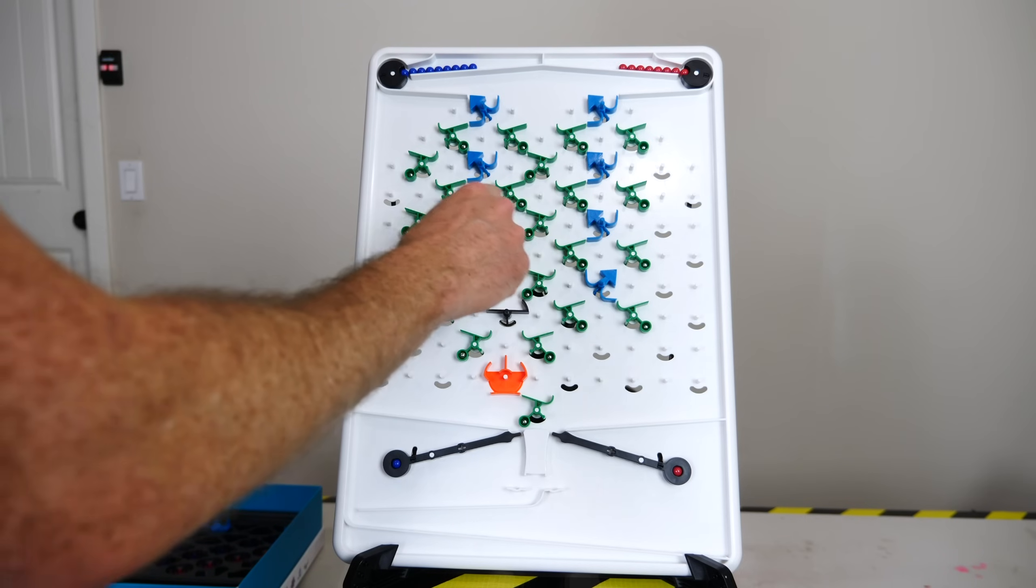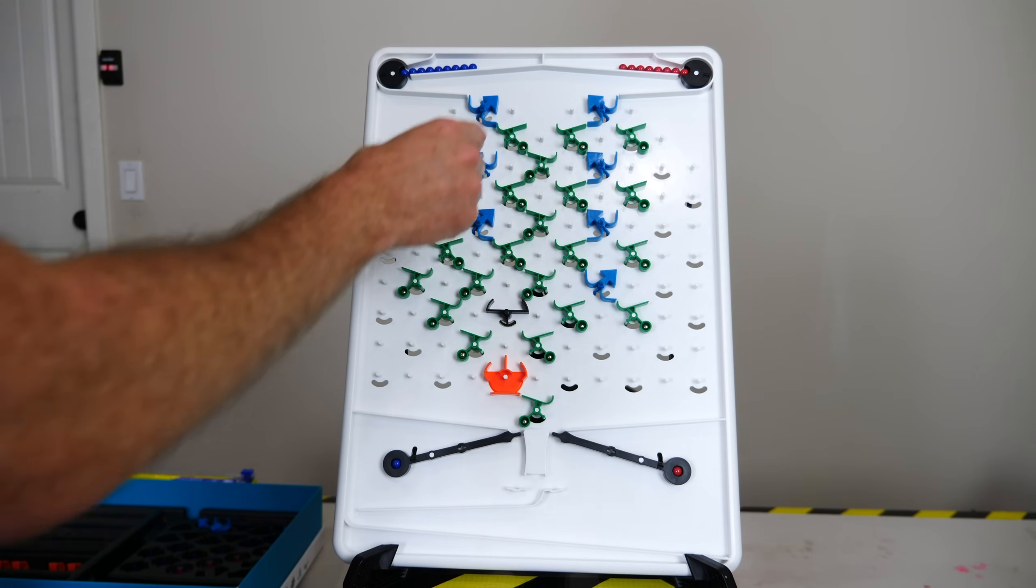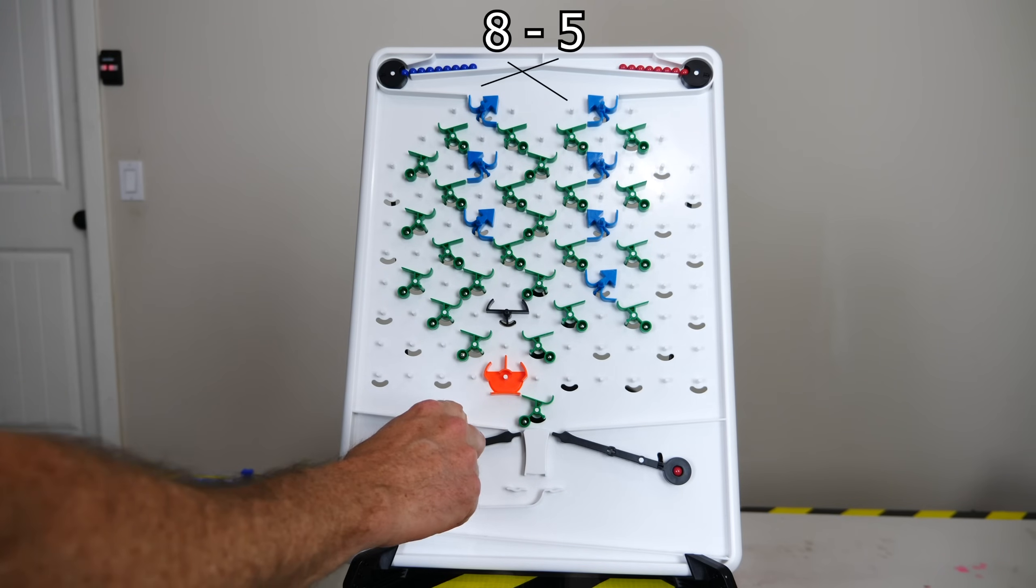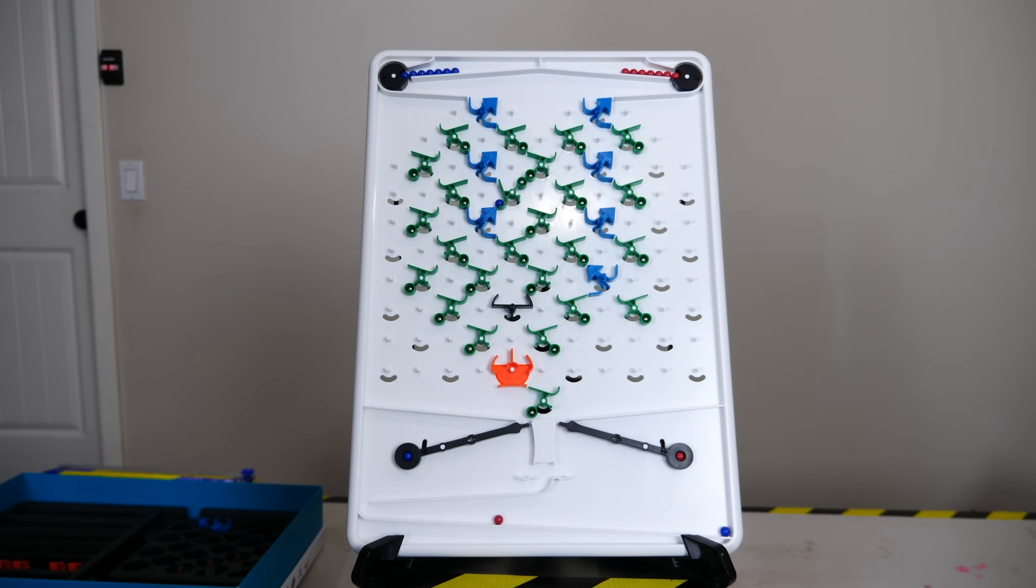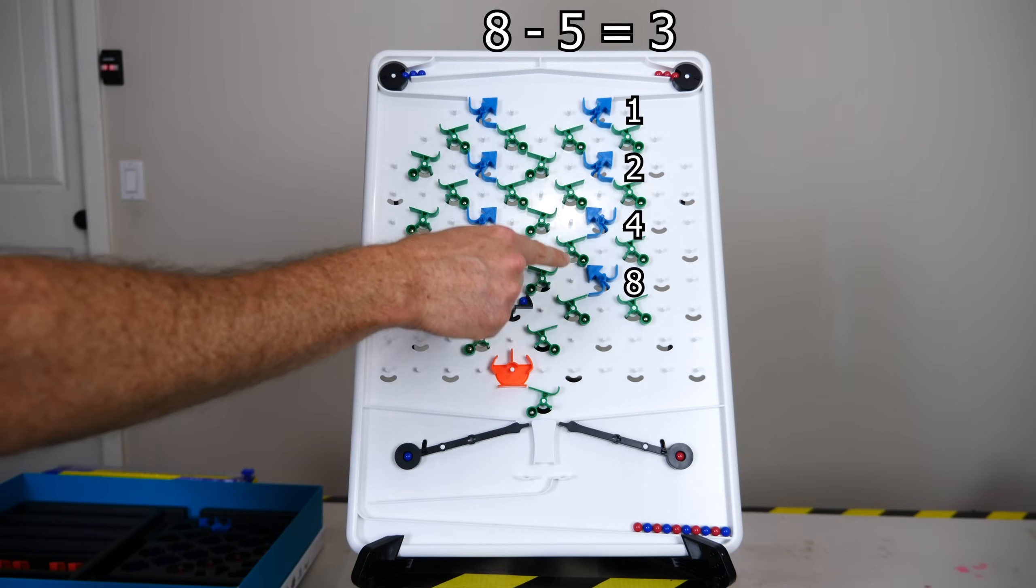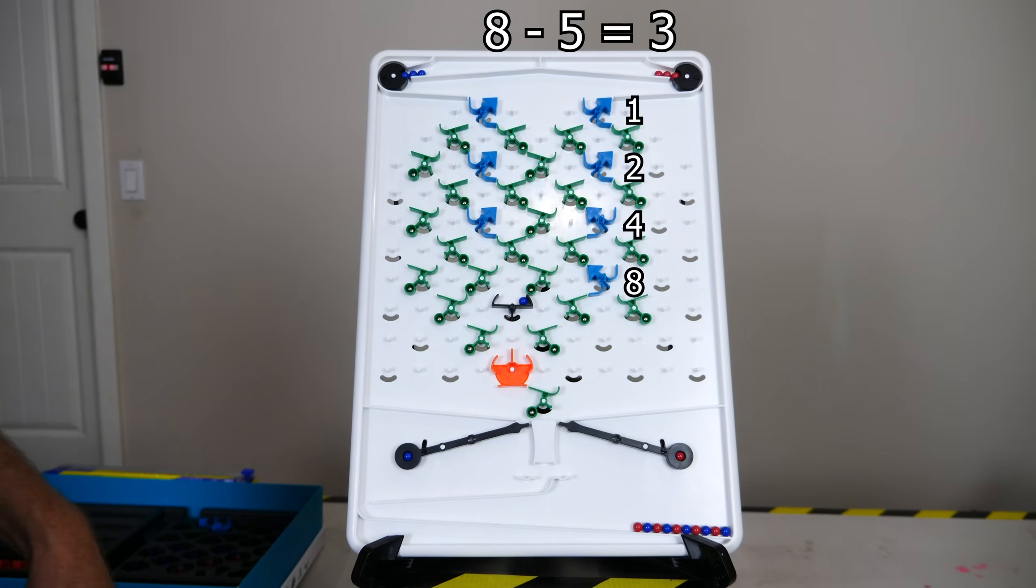Now we're going to do 8 minus 5 and store it in register B. So this is 8. This is 5. Let's see what the result is. Okay, so we can see the final result in this register here is 3. 8 minus 5 is 3. That's correct.